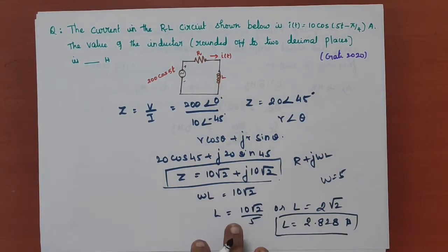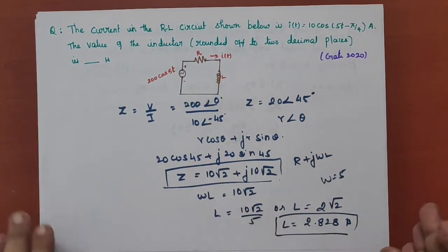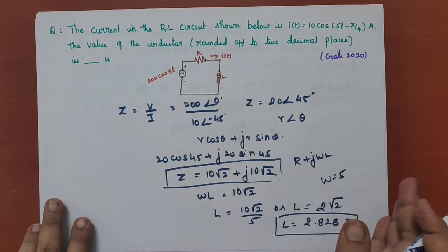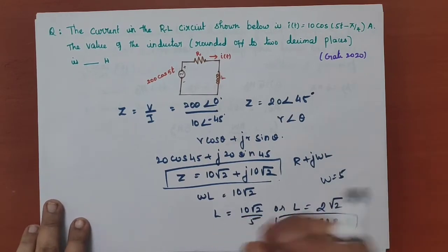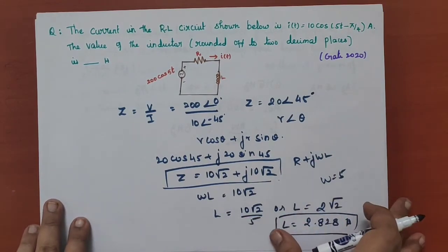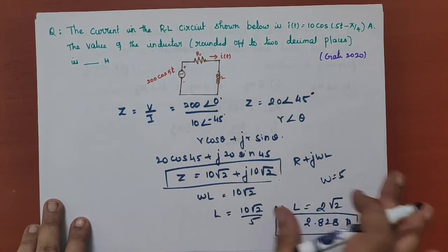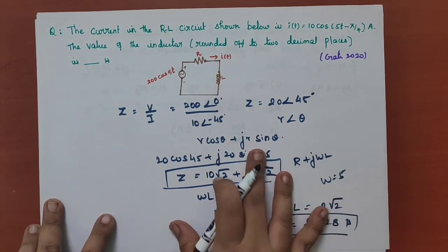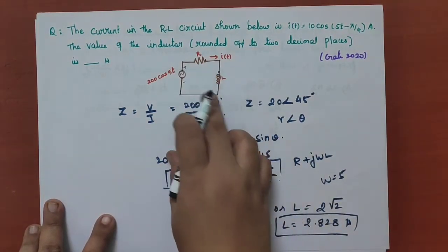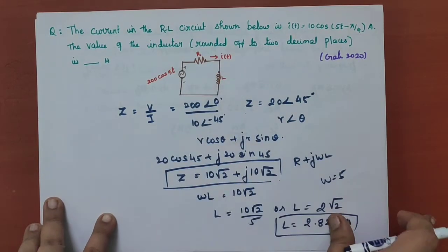In RL circuits, the current begins to flow through the circuit but does not rise rapidly to its maximum value. This is because of the presence of self-induced EMF within the inductor.